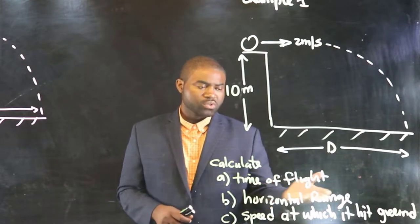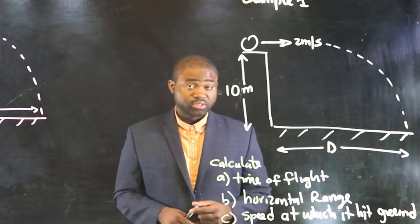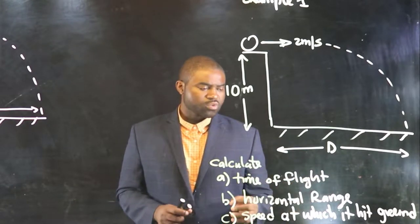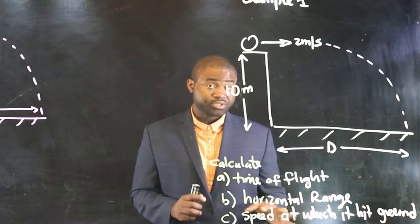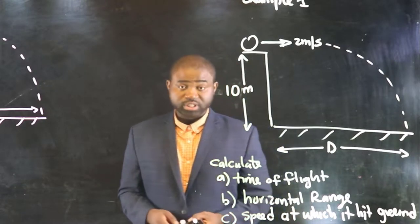Obviously, a horizontal range is a horizontal distance. The speed at which it hits the ground, this is a little tricky, and I'm going to show you exactly what to do.